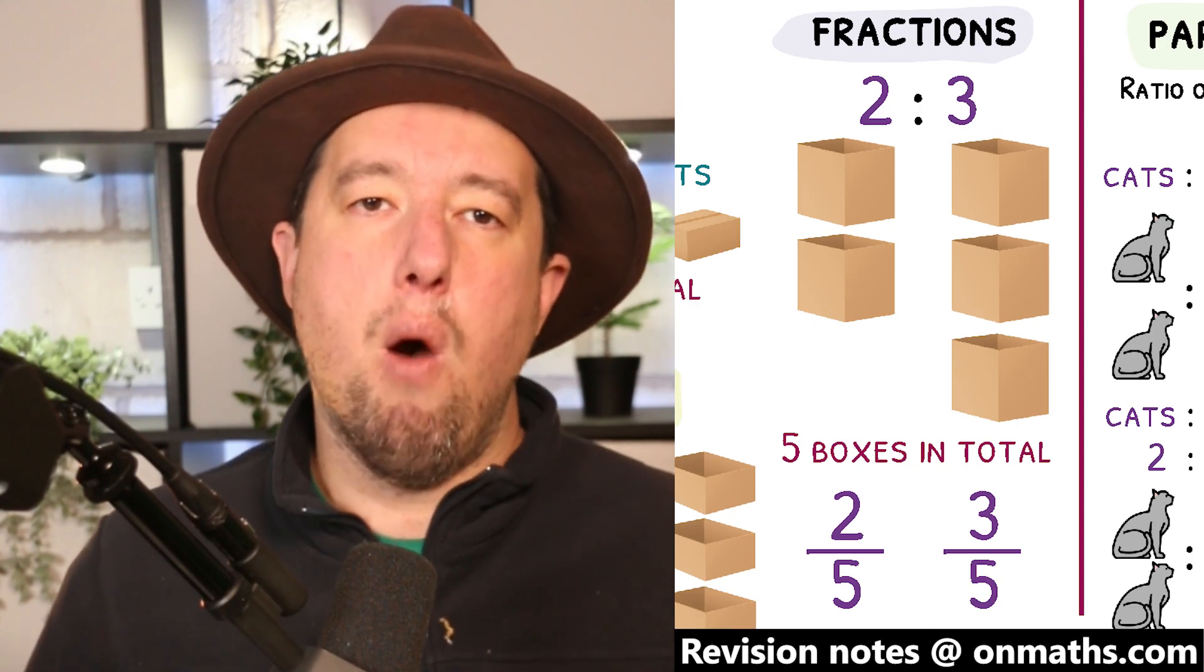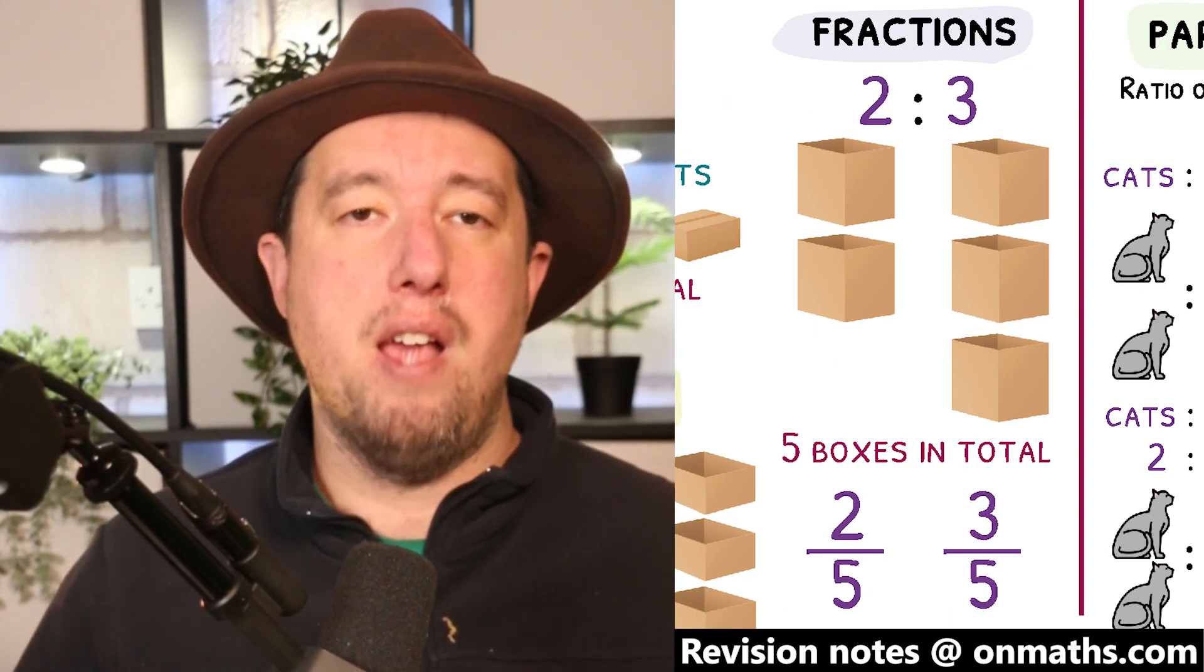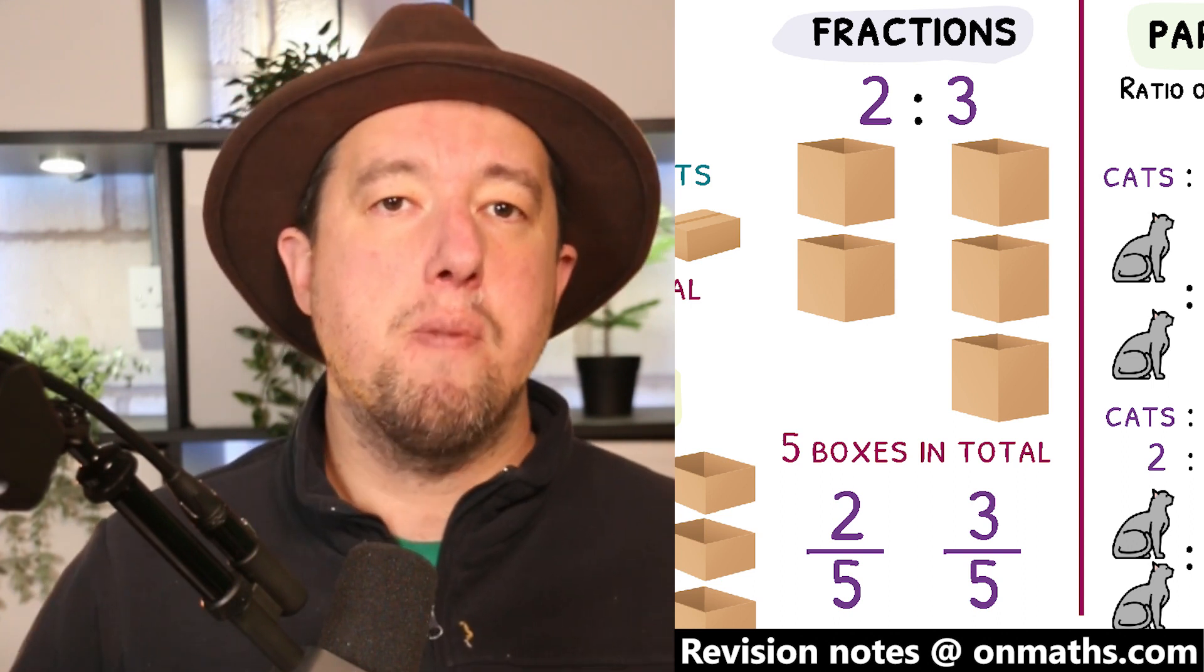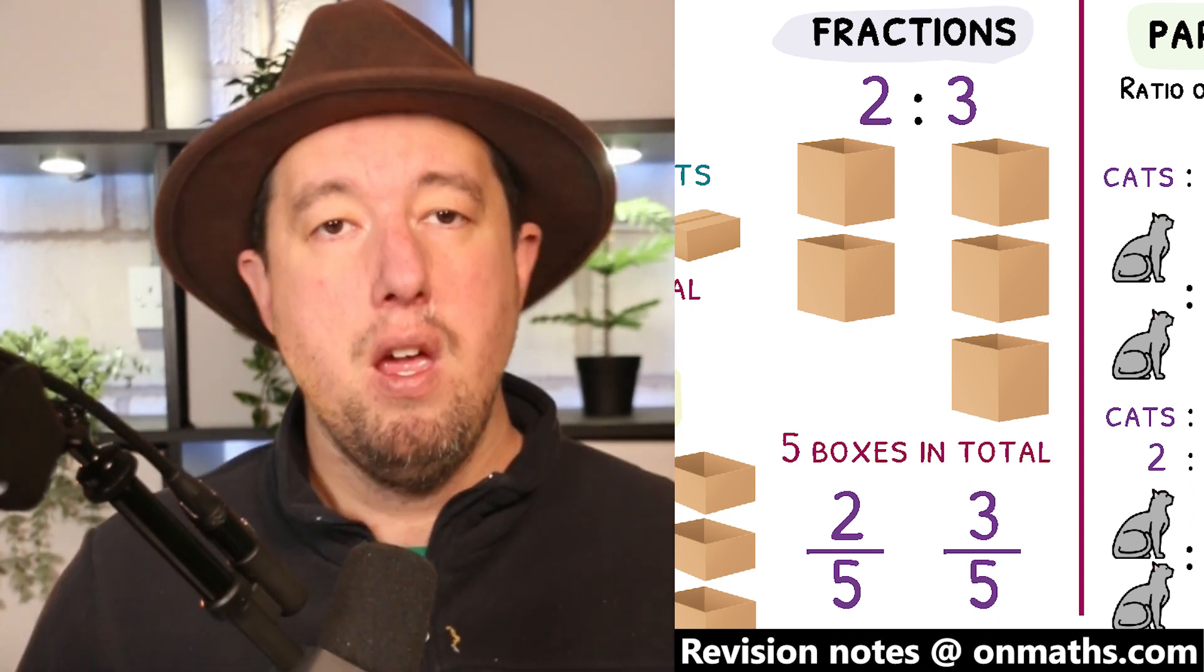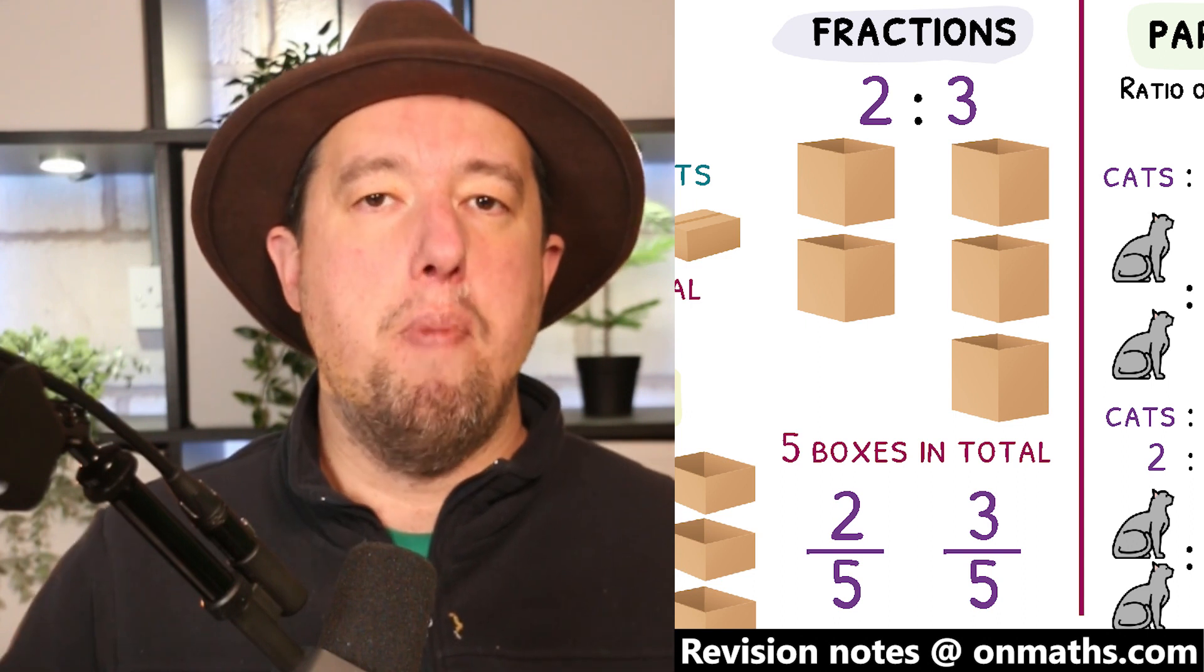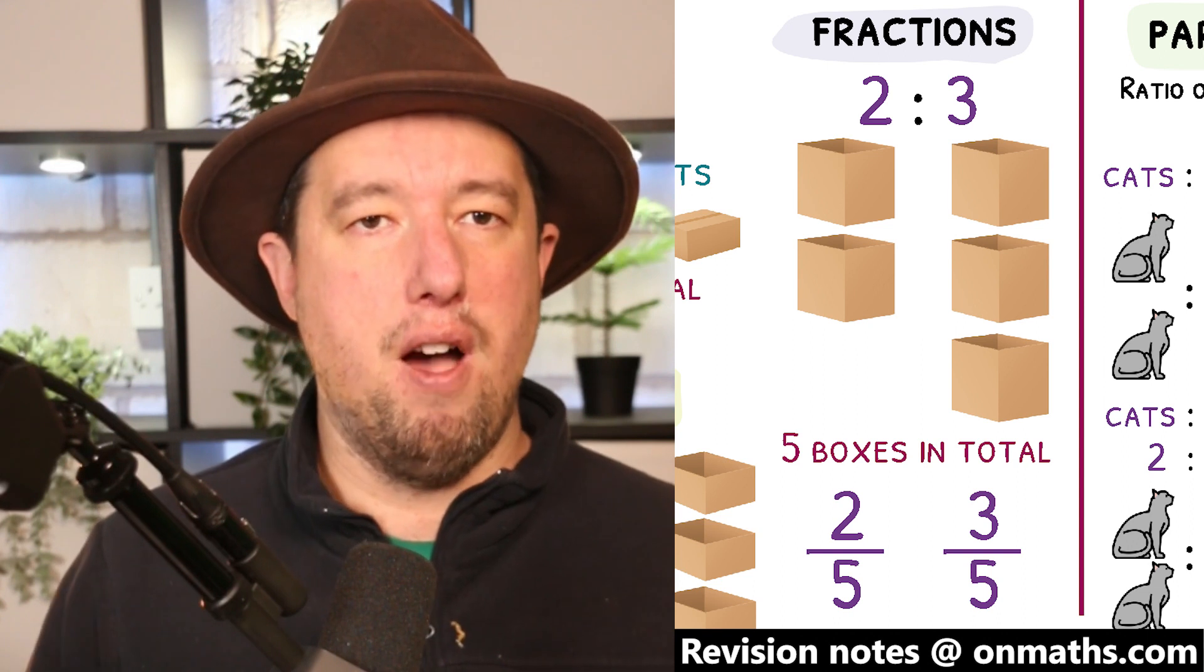Fractions always compare one item to the whole, whilst ratios normally compare two or more items to each other. To convert a ratio to a fraction, you must make sure the denominator includes all of the parts of the ratio. In the ratio 2 to 3, the fraction of the left-hand side will be 2 over 5, and the fraction of the right-hand side will be 3 over 5.